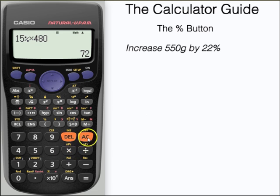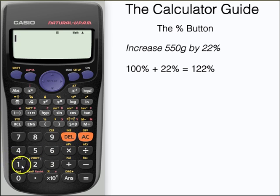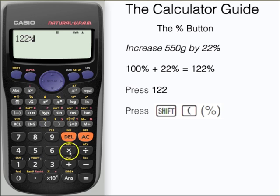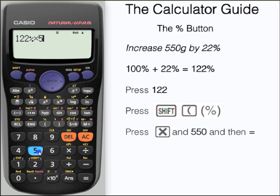We're going to increase by percentage now, 550 grams by 22%. If 550 represents 100% or the total amount, then we want to have an extra 22% or 122% in total. Type in 122 and then press shift and the percentage sign. We want to multiply this by 550 and then press equals which should give us our answer: 671.